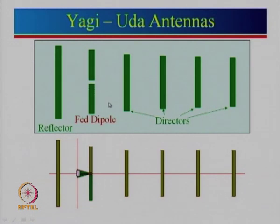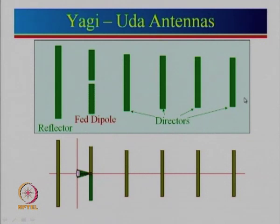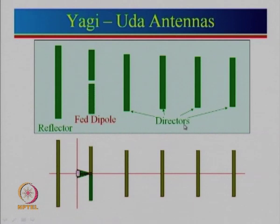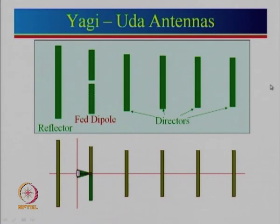In array theory, if all elements are fed with equal amplitude they radiate in the broadside direction, but the Yagi-Uda antenna radiates more in the end-fire direction — this is also known as an end-fire array. More directors increase the gain. Typically the fed dipole should be slightly less than lambda by 2, and the reflector is slightly larger than the fed dipole, while all directors have slightly smaller dimensions than the fed dipole.